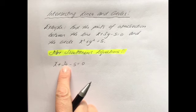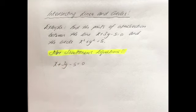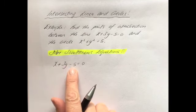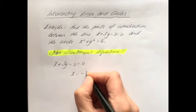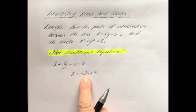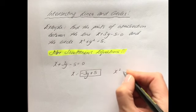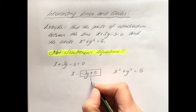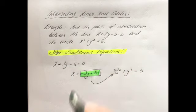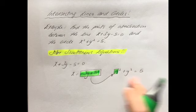Because we have a 3y here, it would be trickier to get y on its own since you'd have to divide everything by 3, which brings in fractions. So it's going to be a lot easier to get x on its own. To get x on its own, I'm going to take away the 3y and add the 5, giving me x equals minus 3y plus 5. Once we have x equals, we take that and sub it into the other equation — the nonlinear equation.